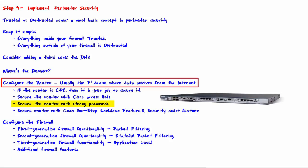Secure the router with strong passwords — make sure that access to the router is properly secured using passwords. Cisco also has two features that help secure their routers: the one-step lockdown feature and the security audit feature. You can use one or both of these features in a semi-automated way to secure the router using the guidance provided by Cisco. If you have another router brand, you can find similar features based on that brand.